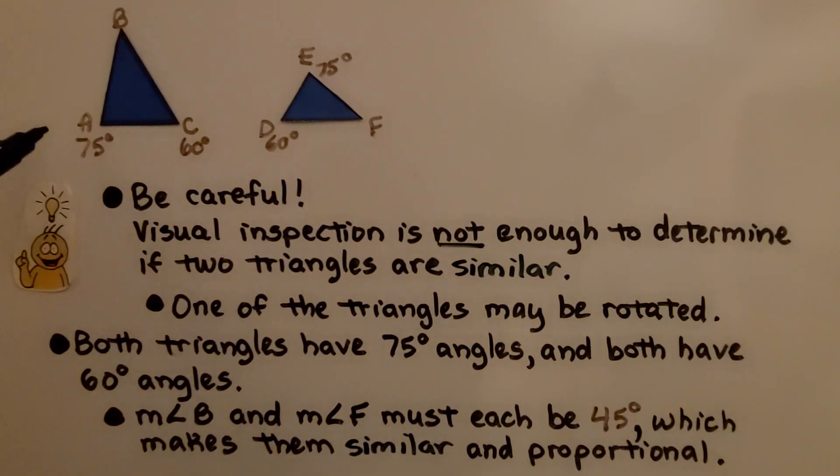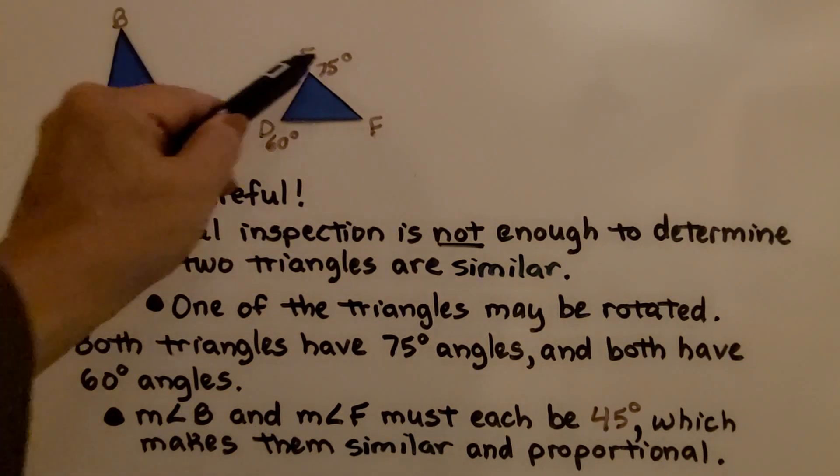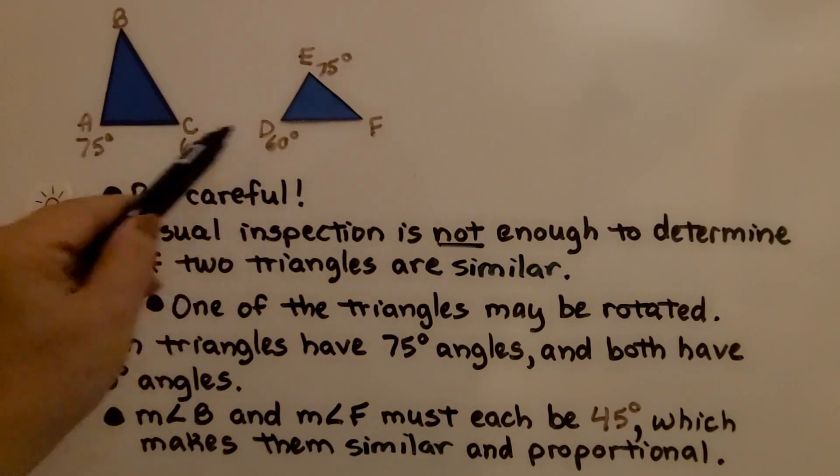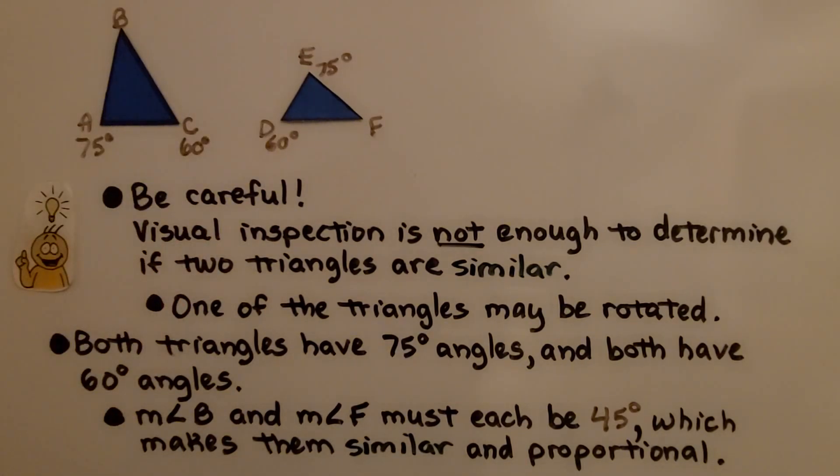Both triangles have a 75 degree angle and they both have a 60 degree angle. The measure of angle B and the measure of angle F must each be 45 degrees, which makes them similar and proportional.